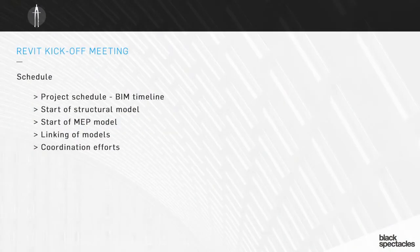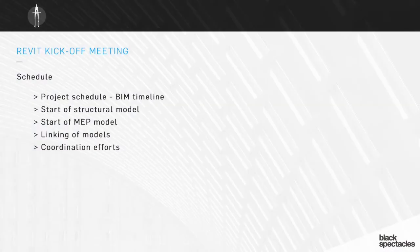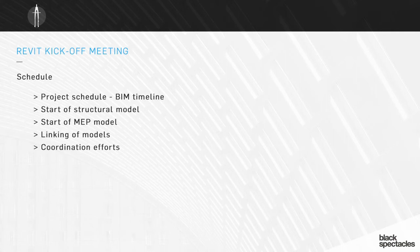Lastly, talk about schedule — not only the overall project schedule but the BIM timeline. When are you starting models? When do you expect to start linking models together? There will be a lag time between when you start a model and when it has enough information to start linking into other files. Typically the architect is the first team member to start a Revit model, with the structural and MEP engineers following a little later. Mapping out that timeline — when each discipline starts their model, when you start linking models together, and when coordination efforts begin — layered on top of the overall project schedule gives you a much better picture of how everything will work.